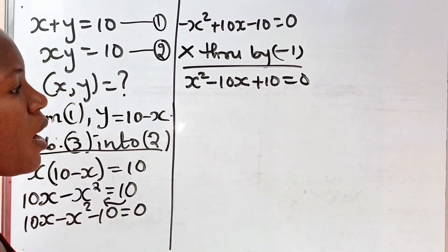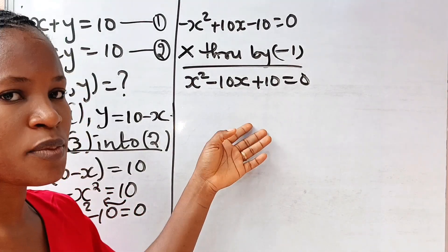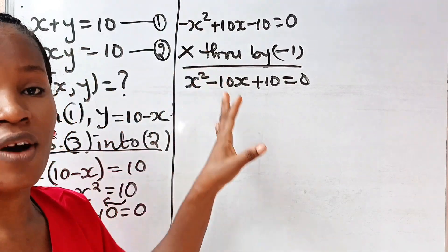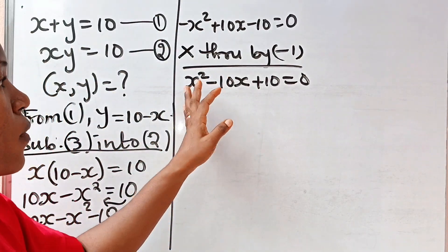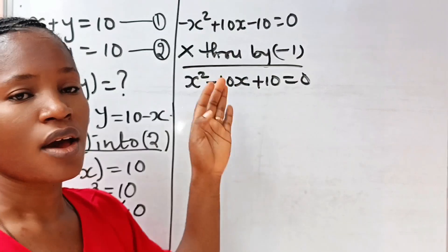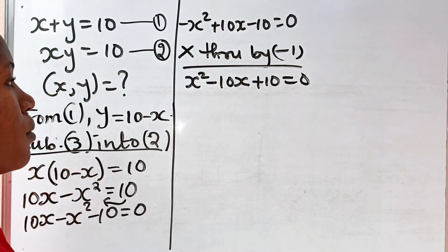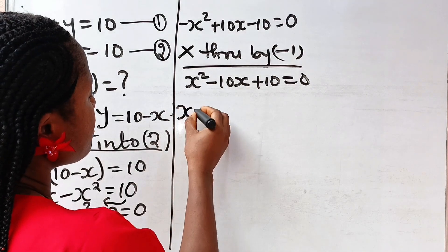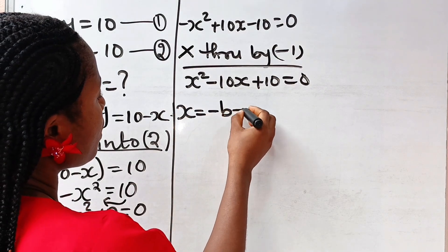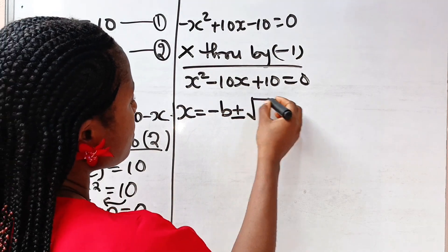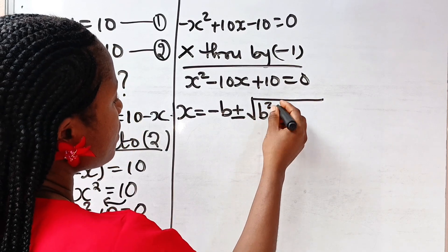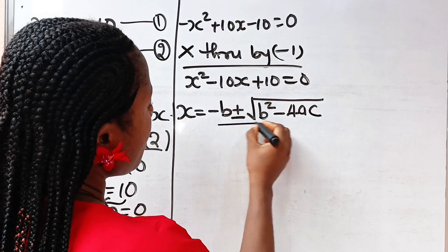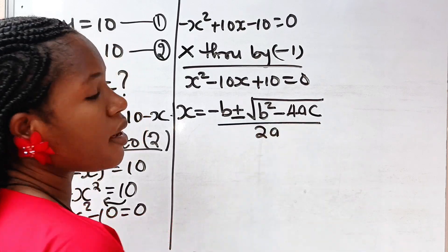Now that we have a quadratic equation, by inspection you can see that we cannot solve this using the factorization method. So rather we are going to solve this using the quadratic formula, which states that x is equal to minus b plus or minus the square root of b squared minus 4ac, everything divided by 2a.